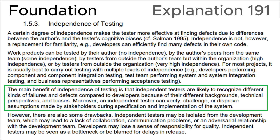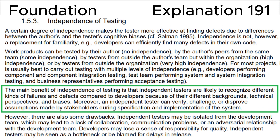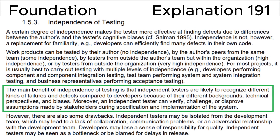Finally, let's look at section 1.5.3, 'The main benefit of independence of testing,' in the ISTQB syllabus. It states that independent testers are likely to recognize different kinds of failures and defects compared to developers, because of their different backgrounds, technical perspectives, and biases. Moreover, an independent tester can verify, challenge, or disprove assumptions made by stakeholders during specification and implementation of the system. This is consistent with the correct answer A.